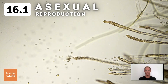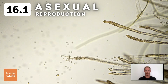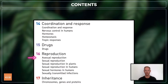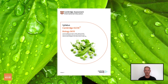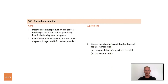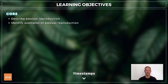Hello and welcome to another complete Cambridge IGCSE biology lesson, where you'll learn absolutely everything you need to know on topic 16.1, asexual reproduction. As always, we'll be following the Cambridge syllabus exactly, and we'll cover absolutely everything you need to know for your final exam. For topic 16.1, you need to describe asexual reproduction and identify examples of asexual reproduction.